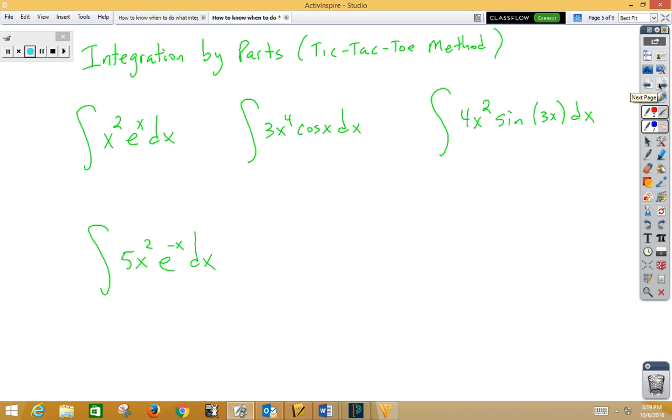Integration by parts. We have two types of integration by parts. One is the tic-tac-toe method. Tic-tac-toe method, remember, if you have algebra that coasts to zero, and the second function is either e to the x, sine x, or cosine x, we can do tic-tac-toe.